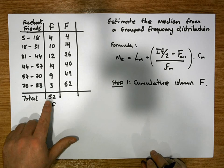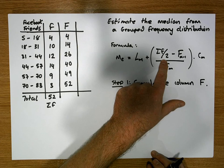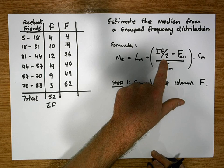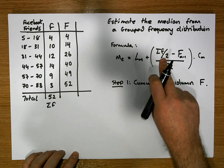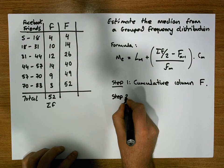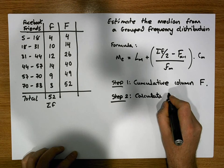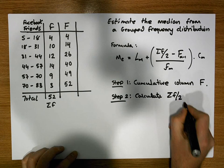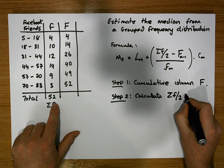There's 52 observations, so what we need to do is this sigma f over two. This is going to be the key for finding where the median class resides. Step two is going to be to calculate sigma f over two. Now in our case, sigma f over two is simply equal to 52 divided by 2.